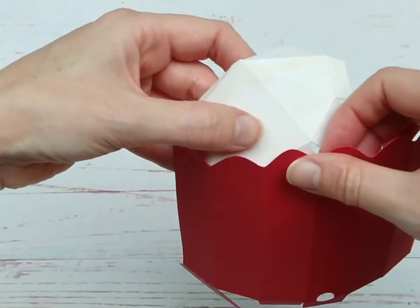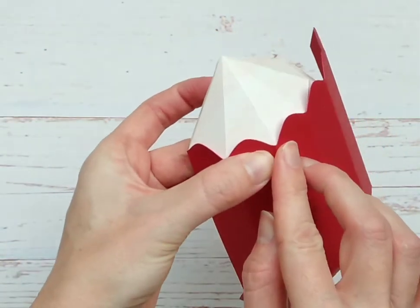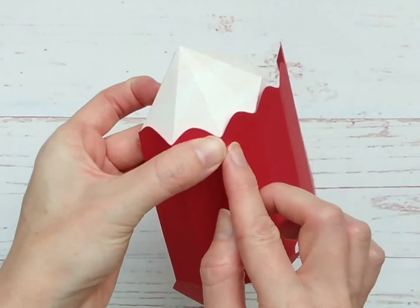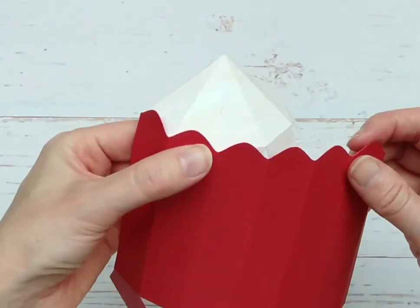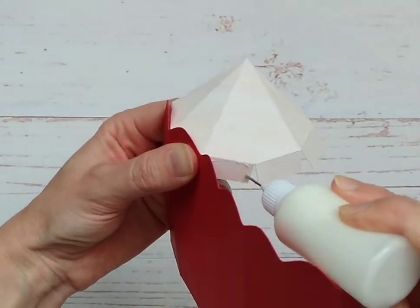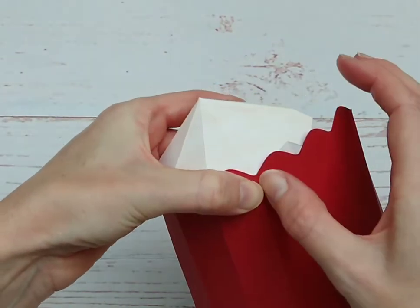And then do the same on the next one. Again, just lining up those two joins, the two corners, making sure that curved bit is not stuck. So just continue lining it up.